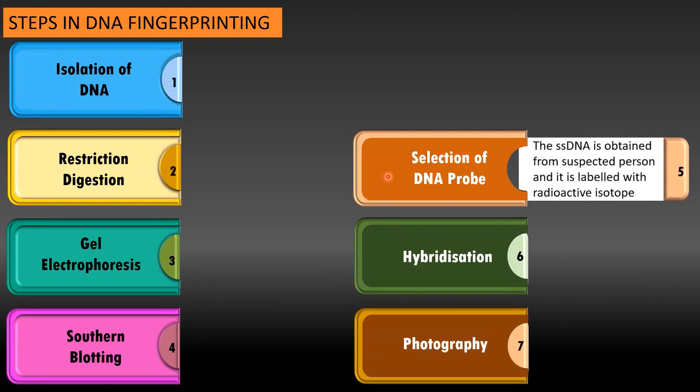And the next step is selection of DNA probe. We collect the DNA from the suspected person and from that person we create a probe. So that is the selection of DNA probe. This DNA is made first single stranded and then it is radio labeled so that we can identify further.